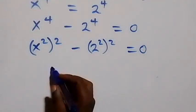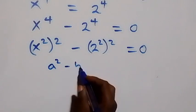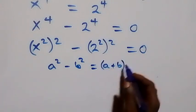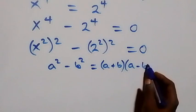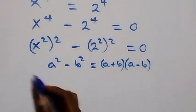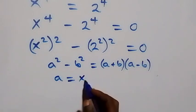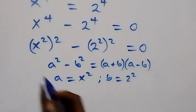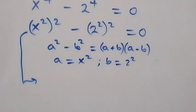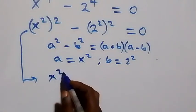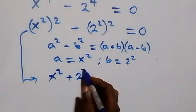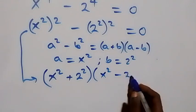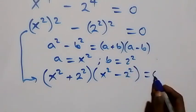This follows from the difference of squares: a squared minus b squared equals (a plus b)(a minus b). Here a is x squared and b is two squared, so the equation becomes (x squared plus two squared)(x squared minus two squared) equals zero.